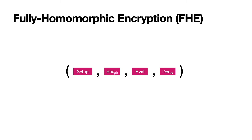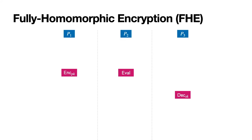I'll start by explaining fully homomorphic encryption, or FHE, since it's an important building block in both of our protocols. An FHE scheme is like a public key encryption scheme in that it contains a setup algorithm, an encrypt algorithm, and a decrypt algorithm, but it also has an evaluate algorithm, which lets anyone evaluate a circuit over encrypted ciphertexts. For example, if party1 encrypts some input x and sends the resulting ciphertext to party2, party2 can use the evaluate algorithm with this ciphertext and some circuit, and then when party3 decrypts the evaluated ciphertext, the decrypted message will be the evaluation of this circuit over x.